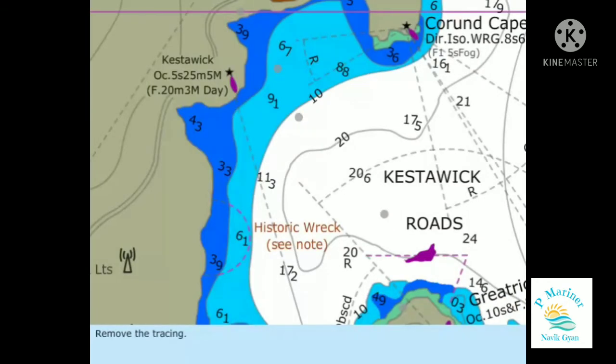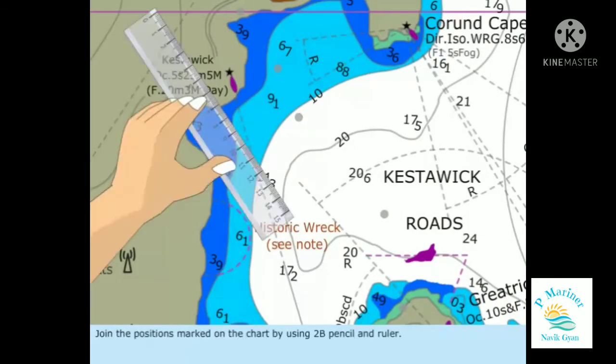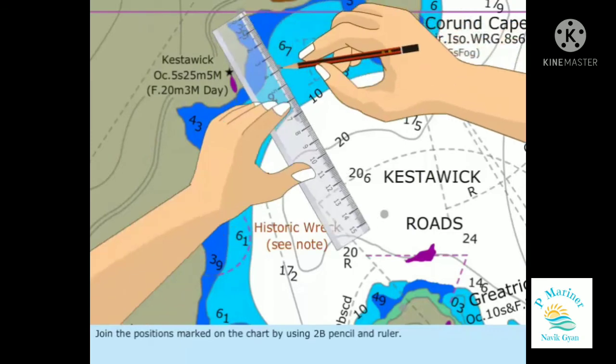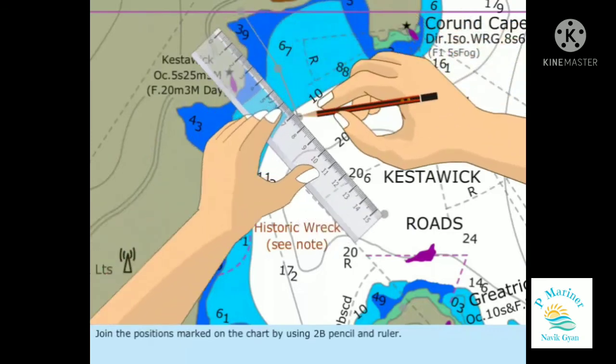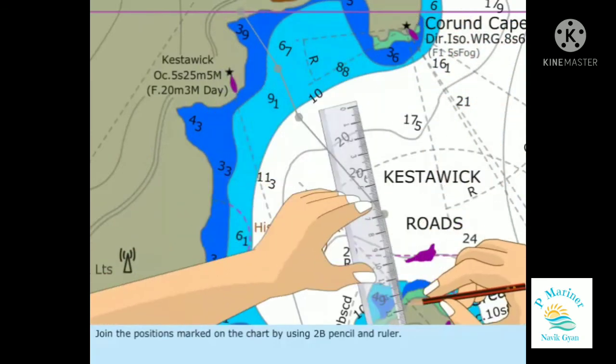Remove the tracing. Join the positions marked on the chart by using the 2B pencil and ruler.